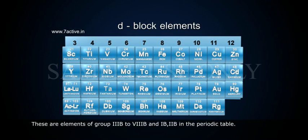D-Block Elements. These are elements of group 3 to 12 in the periodic table.